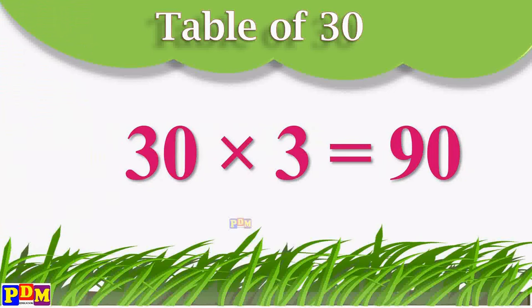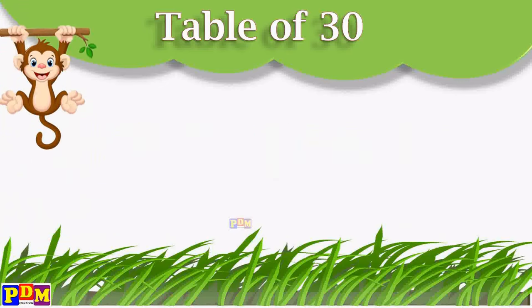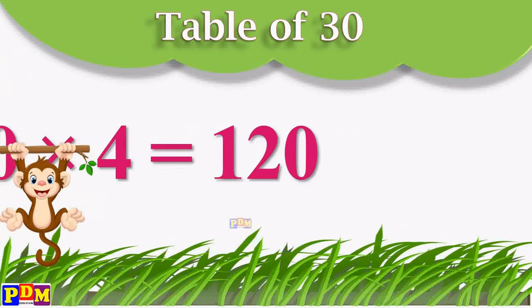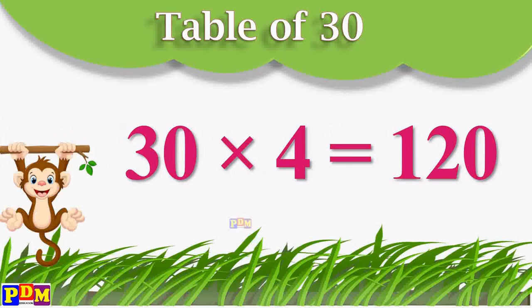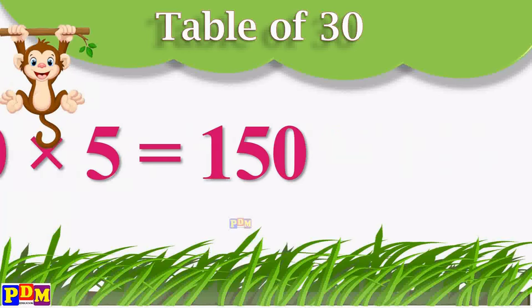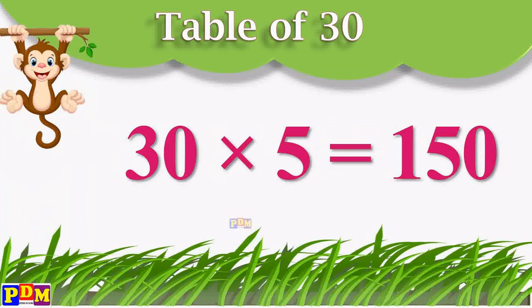3 3's are 90. 3 4's are 120. 3 5's are 150.